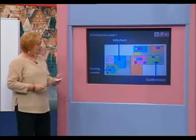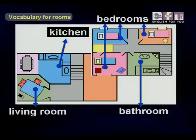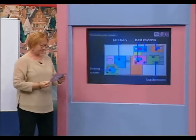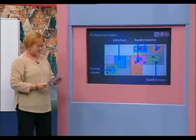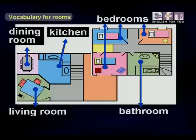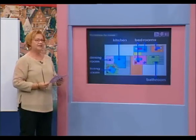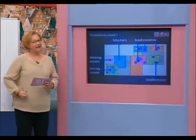Susan, does this house have two bedrooms? No, it doesn't. It has three bedrooms — one, two, three. Isabel, does this house have a dining room? Yes, it does. Yes, it has a dining room. Ali, how many bathrooms does this house have? It has one bathroom. Yes, it has one bathroom. Thank you very much.